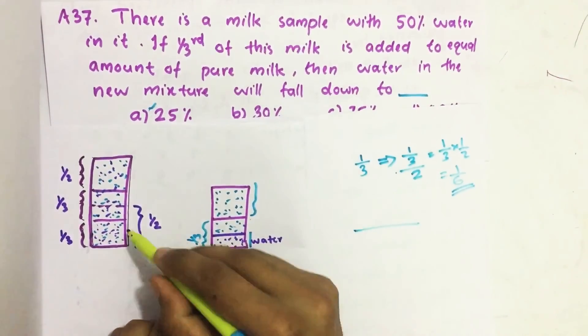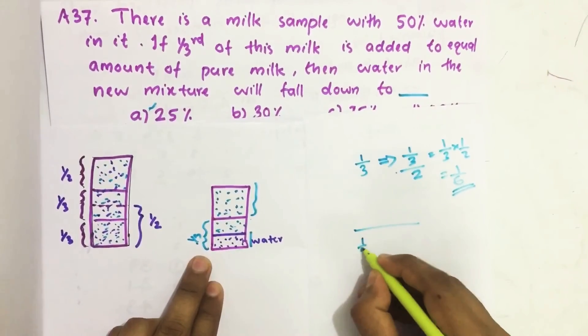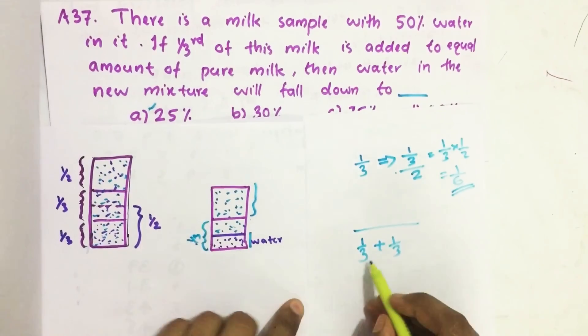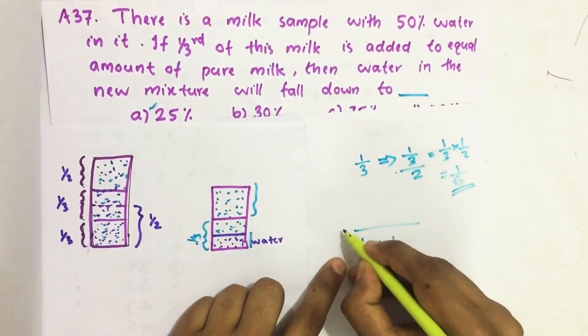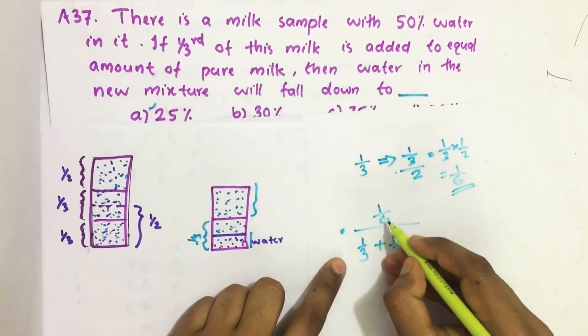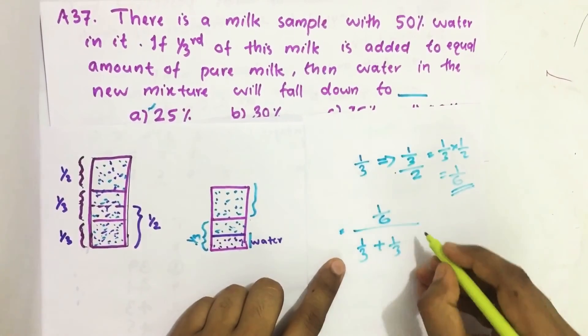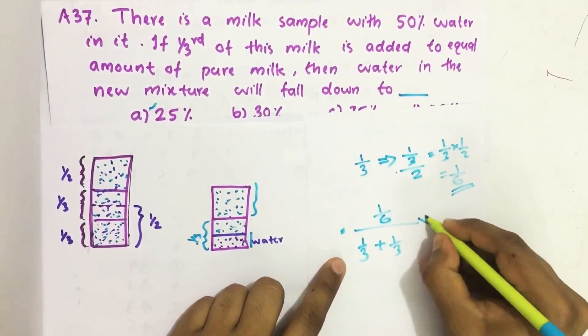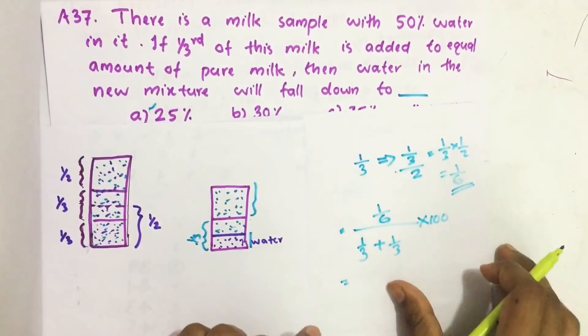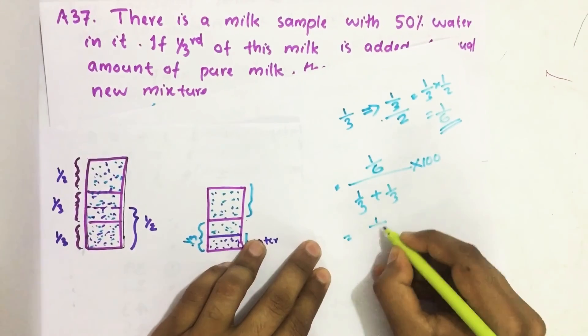Then from here we took one by three and one by three pure milk we added—this is the total—and the amount of water in it is one by six. To get this in percentage we multiply with 100. Then after simplification we get one by six.